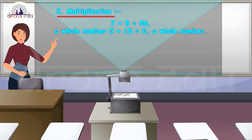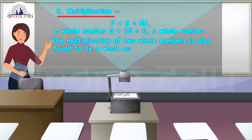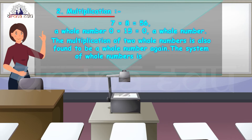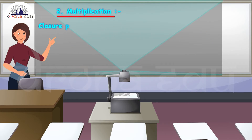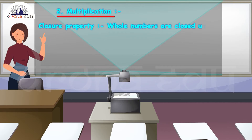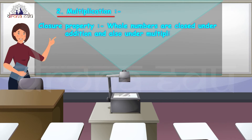So I can say that the multiplication of two whole numbers is also found to be a whole number. The system of whole numbers is closed under multiplication. So the closure property states that whole numbers are closed under addition and also under multiplication.